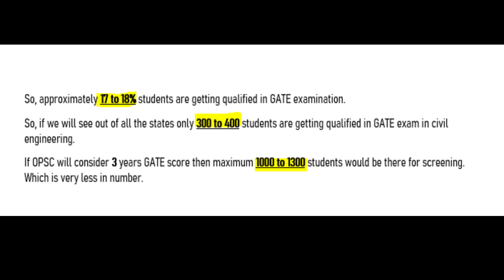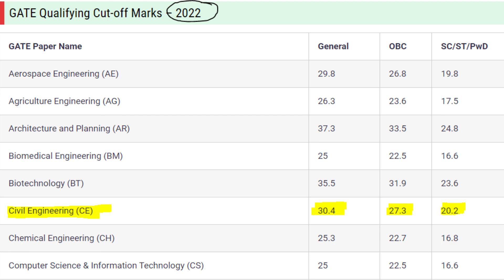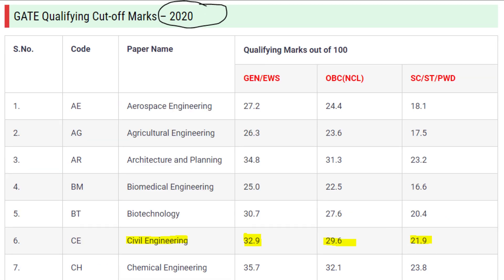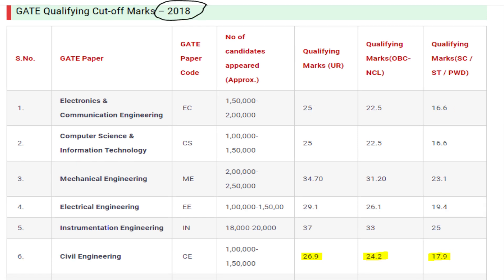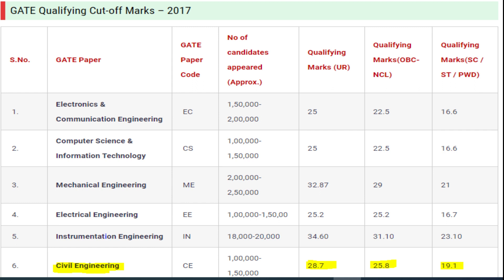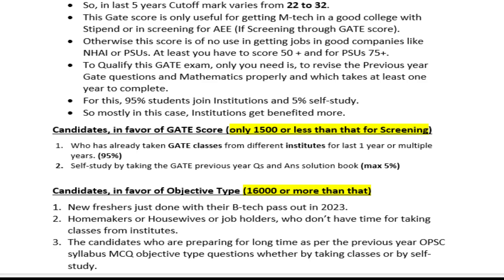Looking at cutoff marks, for 2022 Civil Engineering: General category cutoff was 30, OBC was 27, and SC/ST was 20. In previous years, General ranged 32, 29, 21, 20, 19, and so on. So in the last five years, the cutoff marks vary from 22 to 32. Even 32 is achievable given the right competition.